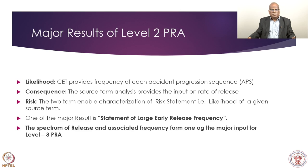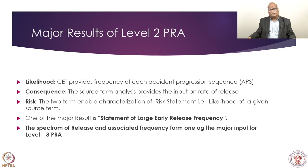Major results of Level 2 PRA are: likelihood of the containment release accident sequences or release categories; consequences — the source term analysis provides input on rate of release; and risk characterization, combining likelihood and source term. One of the major results is the statement of large early release frequency — what consequences occur within two hours. In 90% of the time, planned measures bring down consequences well in time, making the initial two hours very important. The spectrum of release and associated frequency forms one major input for Level 3 PRA.